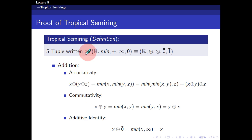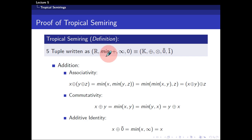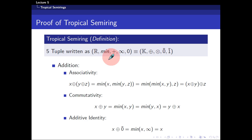Suppose we are given this five-tuple. The set K is the real numbers from negative infinity to positive infinity. The addition operator o-plus is the minimum function. The multiplication o-times is defined as classical addition. The additive identity zero-bar is positive infinity, and the multiplicative identity one-bar is the real number zero.